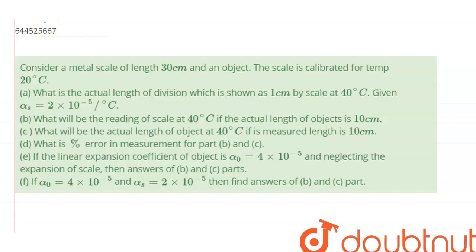Consider a metal scale of length 30 cm and an object. The scale is calibrated for temperature 20 degrees Celsius. What is the actual length of the division which is shown as 1 cm by the scale at 40 degrees Celsius? Given alpha S is equal to 2 into 10 raised to the power minus 5 per degree Celsius.